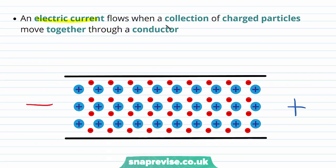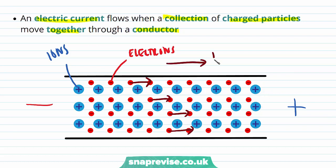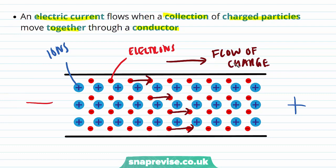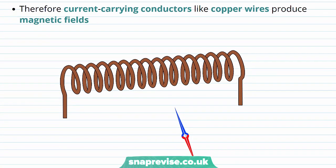An electric current will flow when a collection of charged particles move together through a conductor. For example, here we have a lot of electrons, which are negatively charged, as well as positive ions. When a current flows, the electrons are going to be moving. In this case, they are moving in this direction, which means the flow of charge is this way. Although the flow of charge is from left to right here, we actually define the current to be in the opposite direction. You don't need to know too much about this for now, it will come up in more detail later.